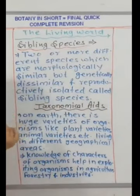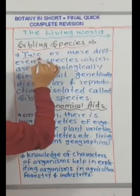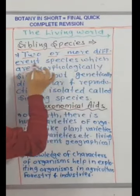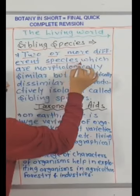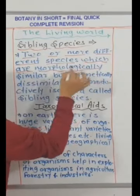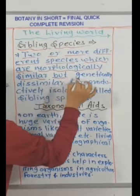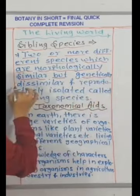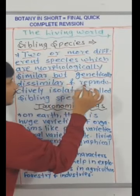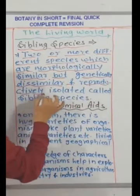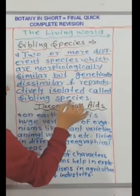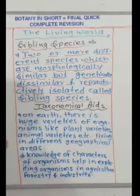Sibling species: two or more different species which are morphologically similar but genetically dissimilar and reproductively isolated are called sibling species.